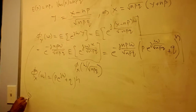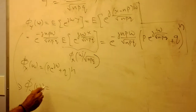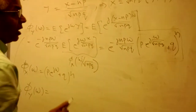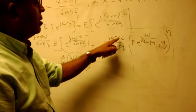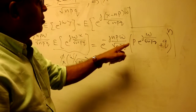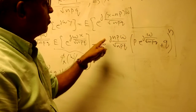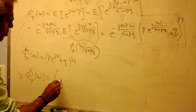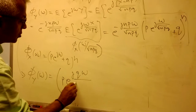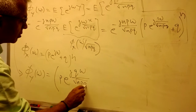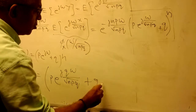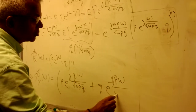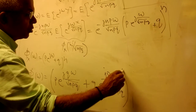So φ_y(ω), when the phase factor is pulled inside, gives the numerator: pe^(jqω/√(npq)) + q · e^(−jpω/√(npq)), the whole thing to the power n. Notice the phase terms combine: the factor (1 − p) = q, so the two exponential arguments combine accordingly, giving this compact expression raised to the power n.